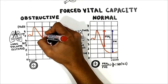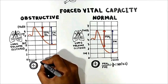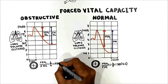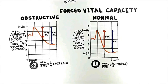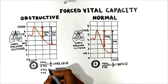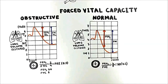The FEV1 is also decreased to 2 liters. The FEV1/FVC ratio is 2 divided by 4 = 50% or 0.5 — less than normal. It is extremely important to note that both FEV1 and FVC are reduced, but FEV1 is reduced more than FVC. Because we are decreasing the numerator more than the denominator, the fraction decreases, so the FEV1/FVC ratio is decreased.